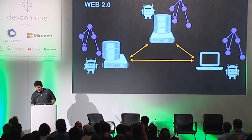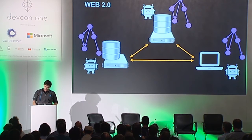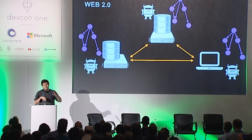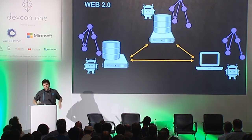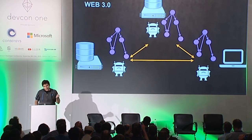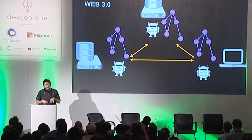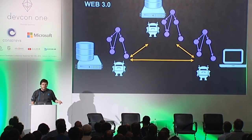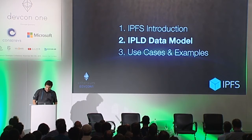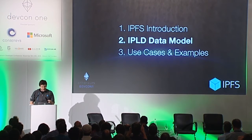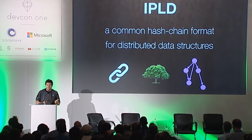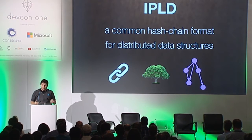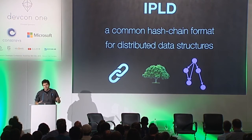So Web 2.0 is kind of about having these databases talking to each other with data behind the scenes. With Web 3.0, it's about taking the logic and the data itself and putting those into the network, allowing those to communicate and making the actual hardware secondary. IPLD is the heart of IPFS — it's a common format for hash chains or distributed data structures based on Merkle trees.